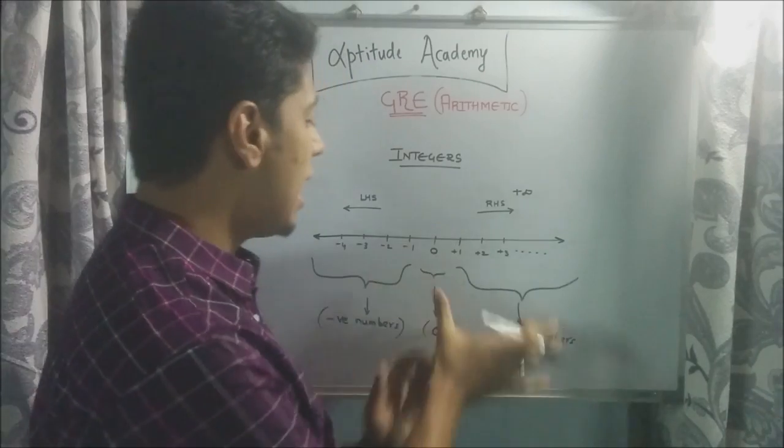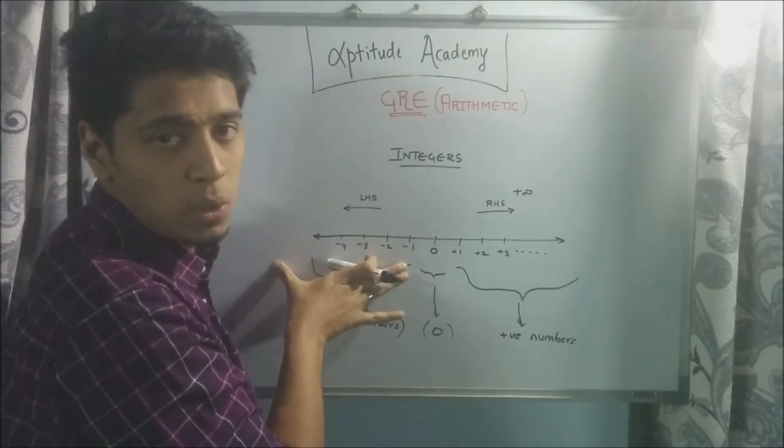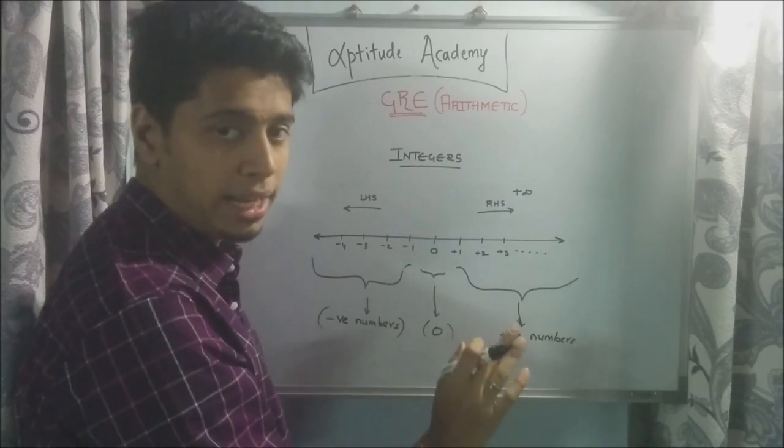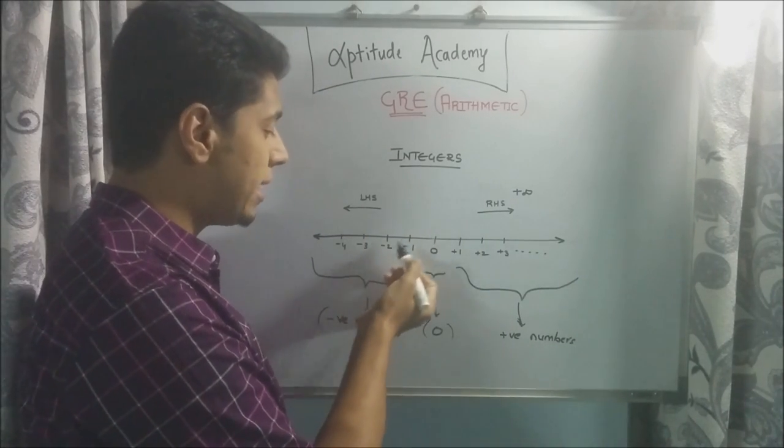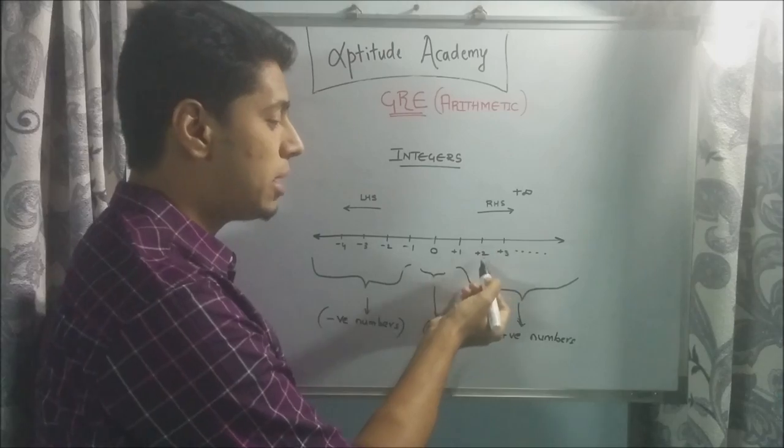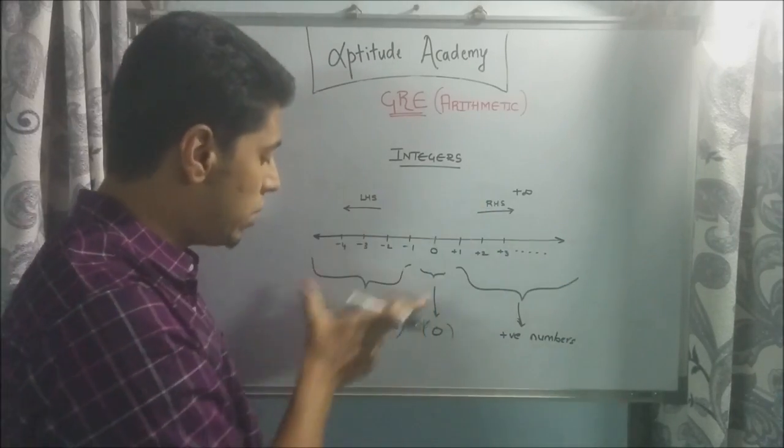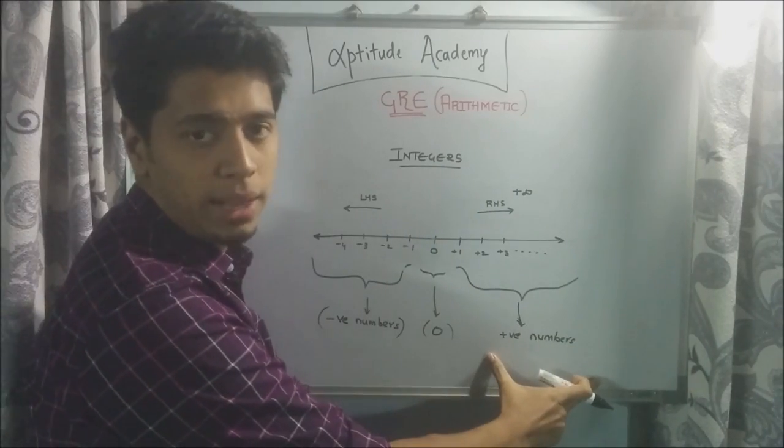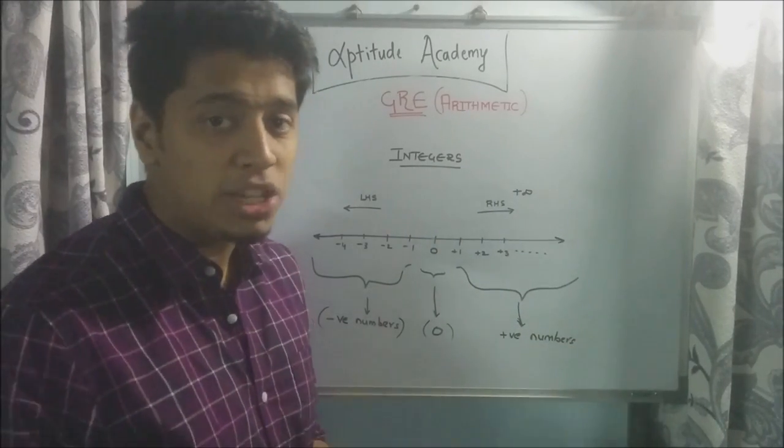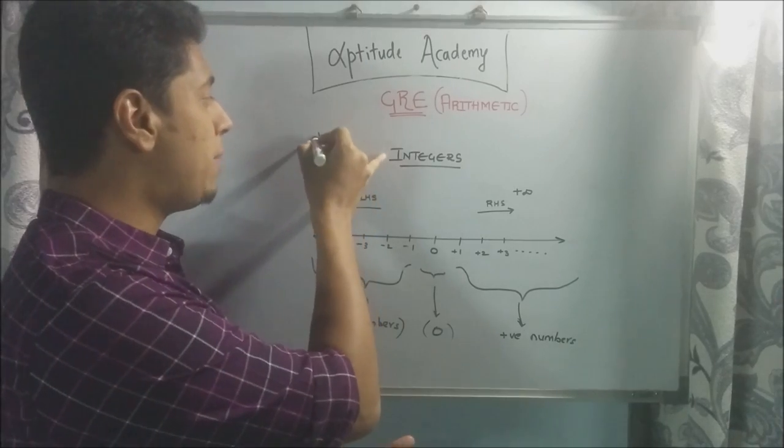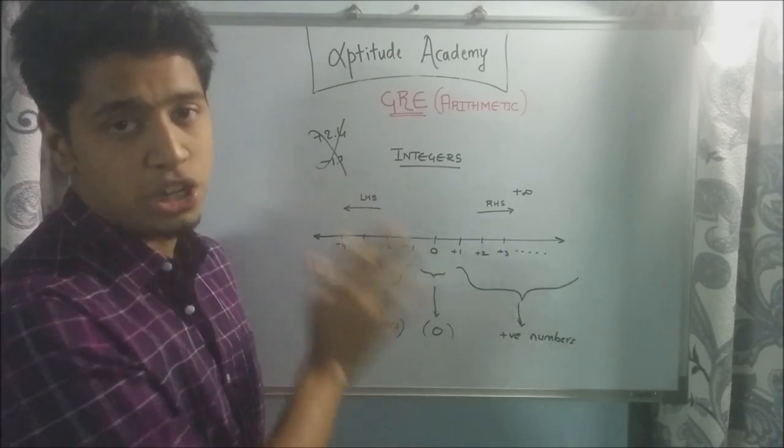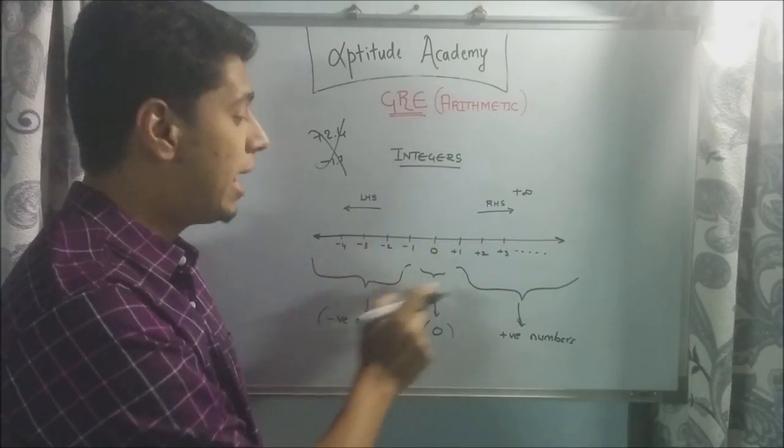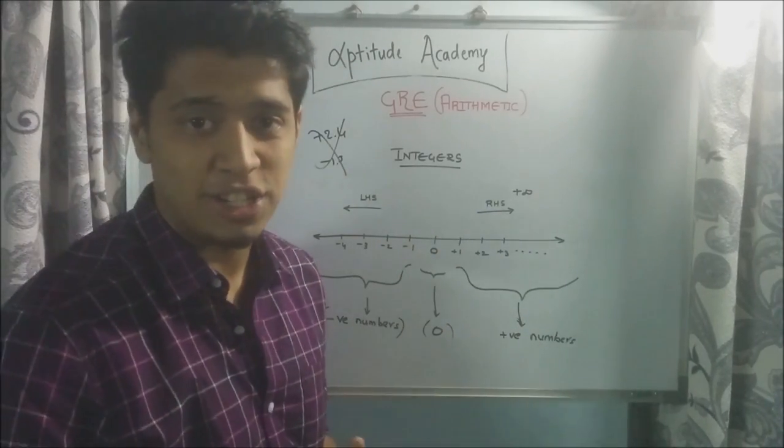Now your integers are your whole numbers and their negative counterparts. So integers are the whole numbers on the entire number line. So you've got minus four, minus three, minus two, minus one, zero, plus one, plus two, plus three and so on. So integers will be all the negative numbers, zero and the positive numbers as well. Keep in mind that integers are not minus one point three and plus two point four. All of the whole numbers, the positive and the negative, including the zero, are defined as integers.